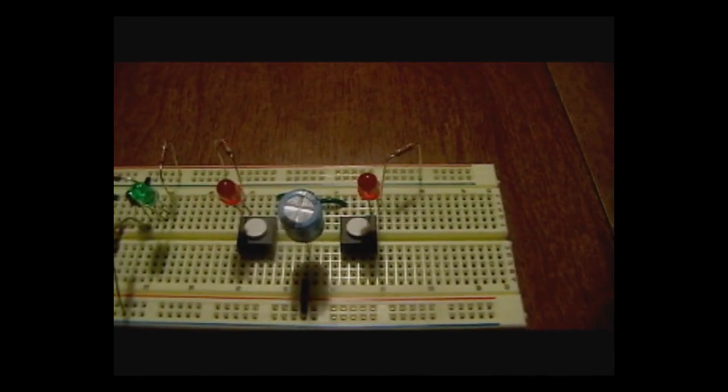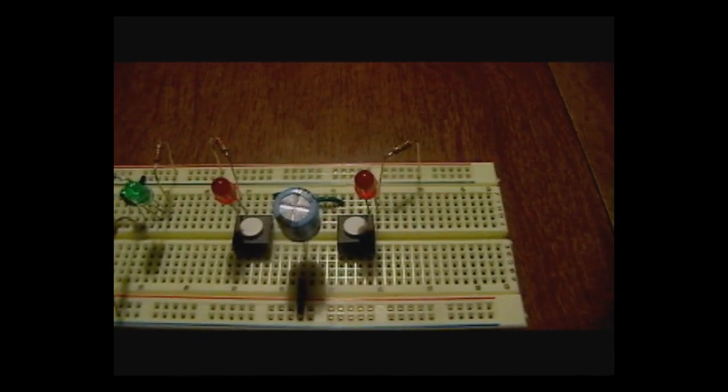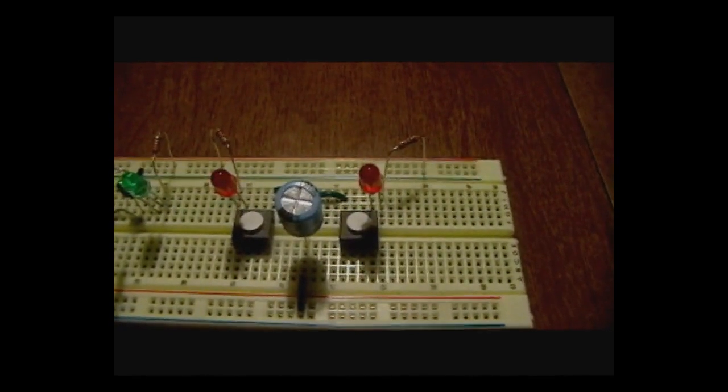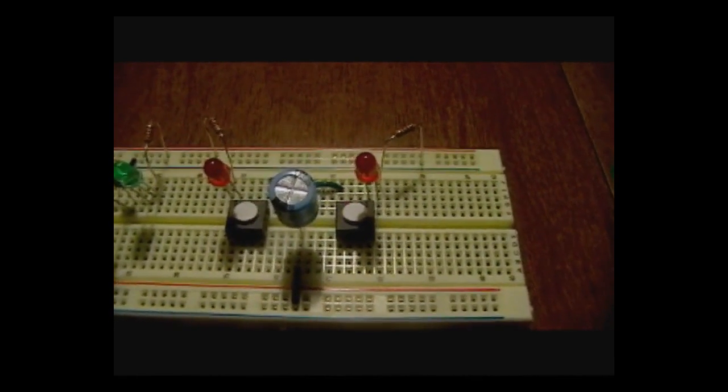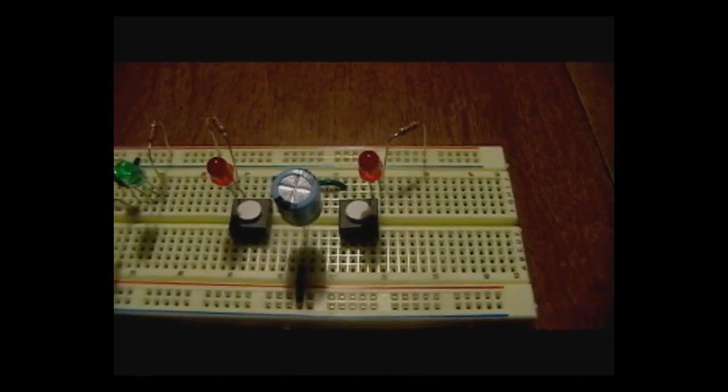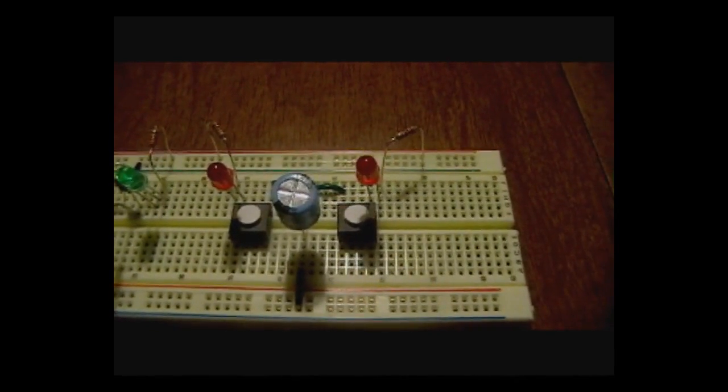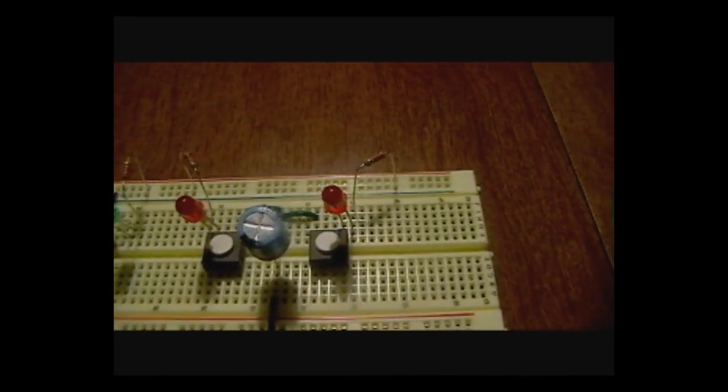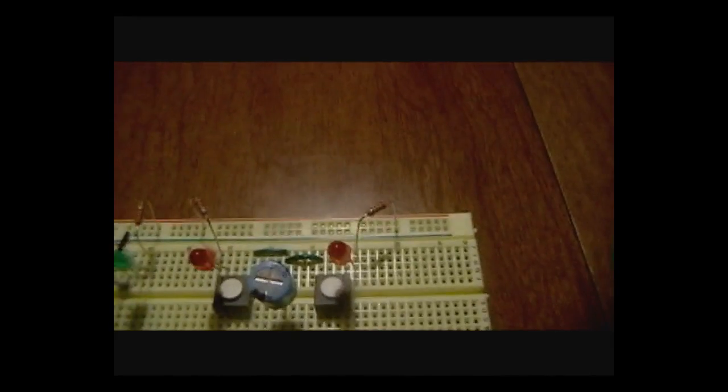There's two buttons. The first button will basically flow current through the LED and charge the capacitor, and the second button will basically discharge the capacitor through a different LED back to ground.